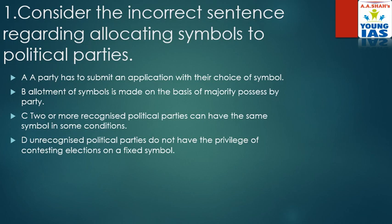You might have heard about the charismatic leader Jayalalitha, who recently passed away — she belonged to this party. Now let's look at the options. Option A: a party has to submit an application with their choice of symbol — yes, that's right. Option B: allotment of symbol is made on the basis of majority possessed by the party — no, this is wrong. The allotment of symbol is on a first-come-first-serve basis, so option B is the incorrect one.